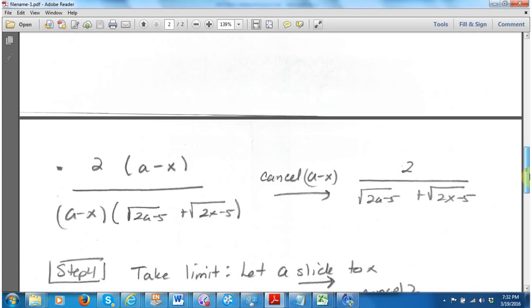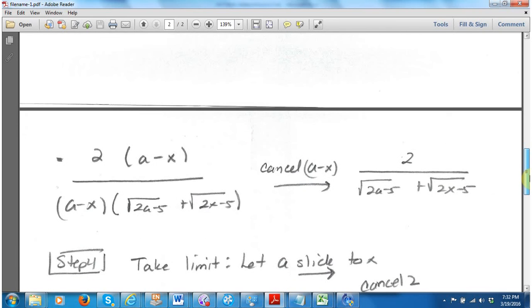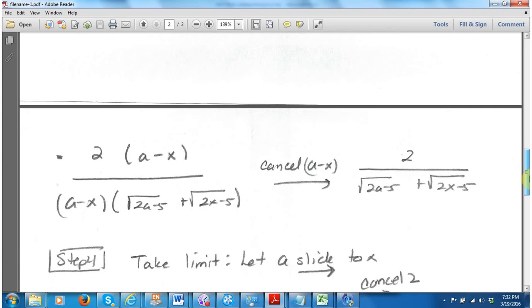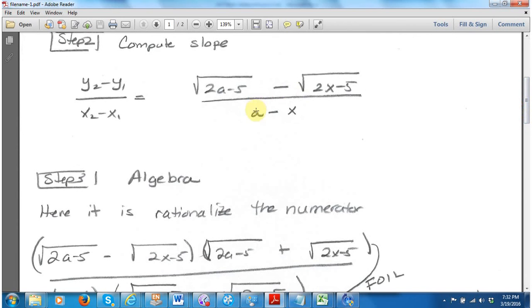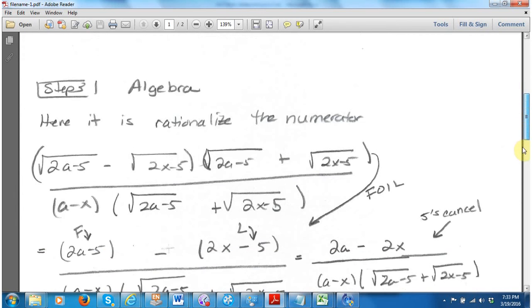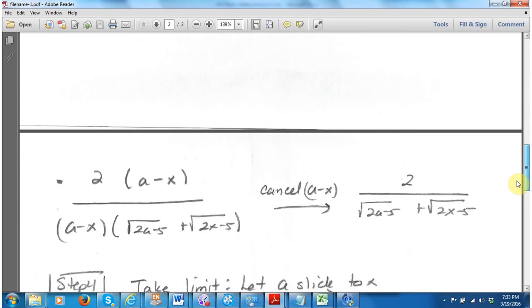I can drop the parentheses now because there's no multiplication going on. So the reason I had to do this is because back here, I couldn't just plug or let a slide to x. If I let a slide to x, I'm going to have a problem because I'll have a 0 in the denominator.